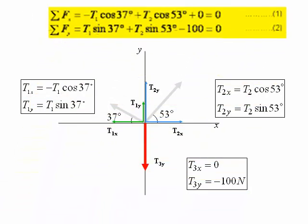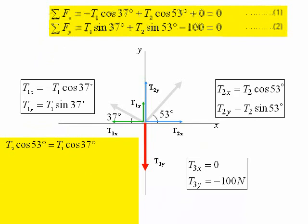From equation 1, T2 cos 53 degrees is equal to T1 cos 37 degrees. T2 is equal to T1 cos 37 degrees divided by cos 53 degrees, which is equal to 1.33 T1.